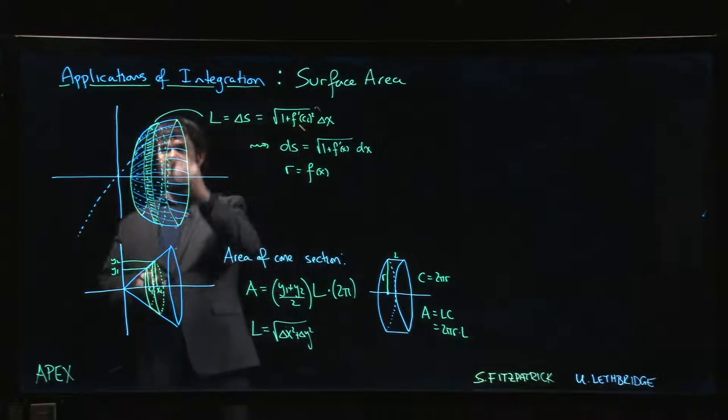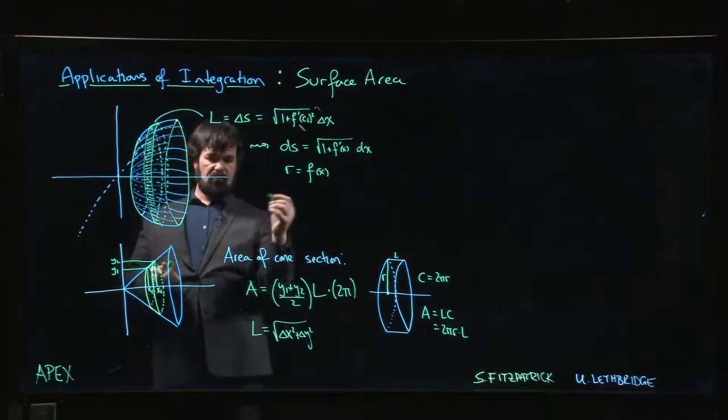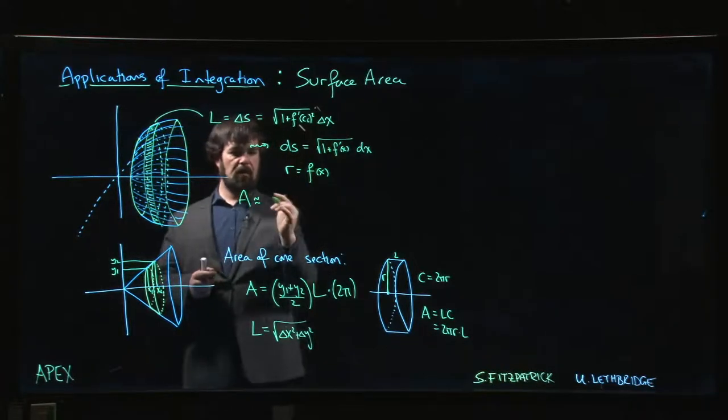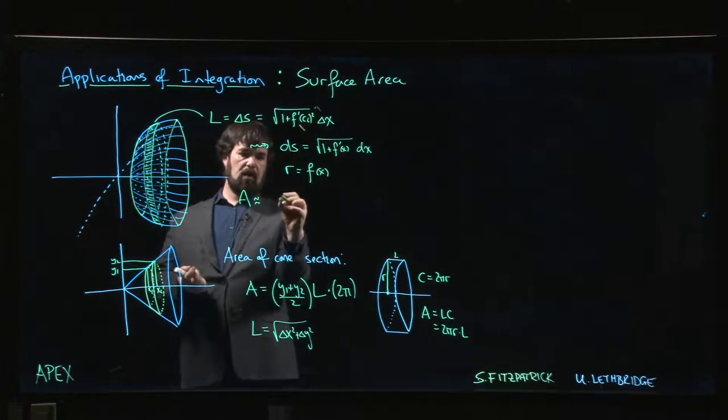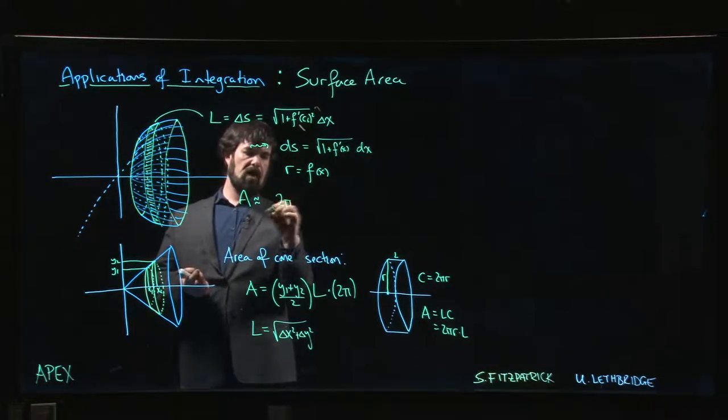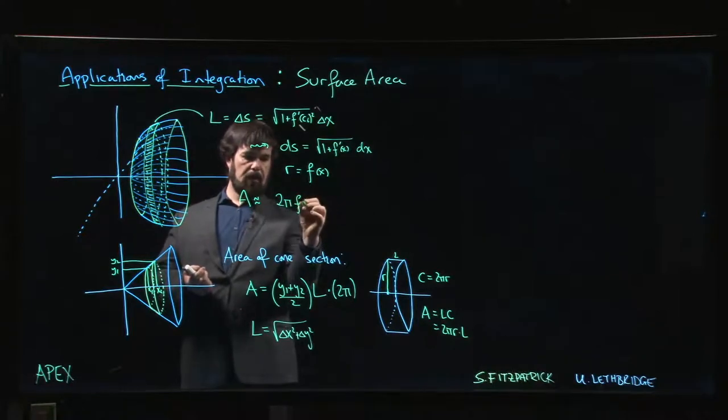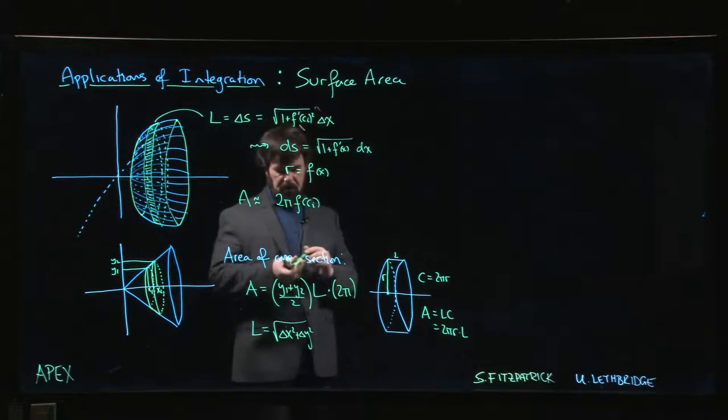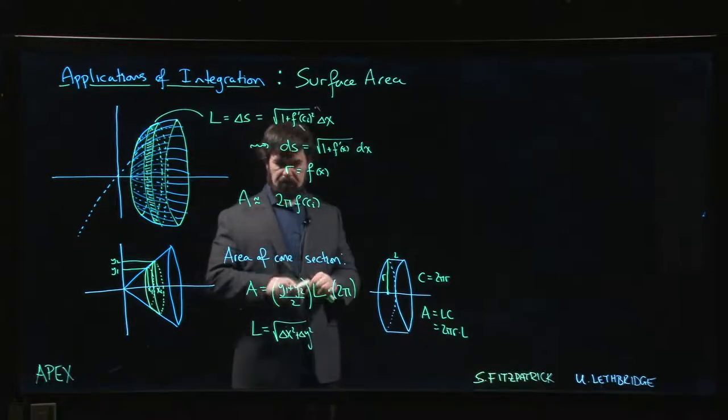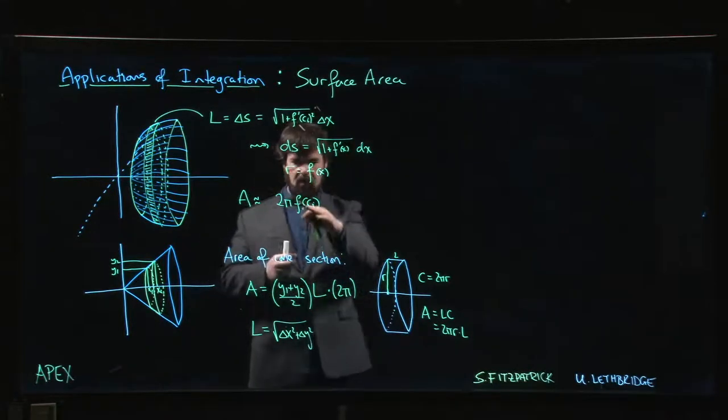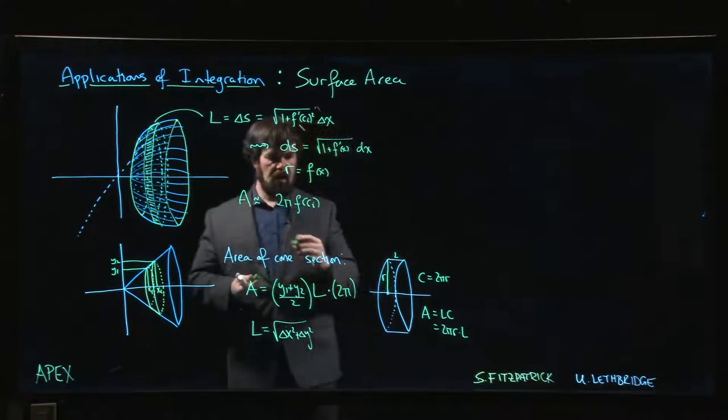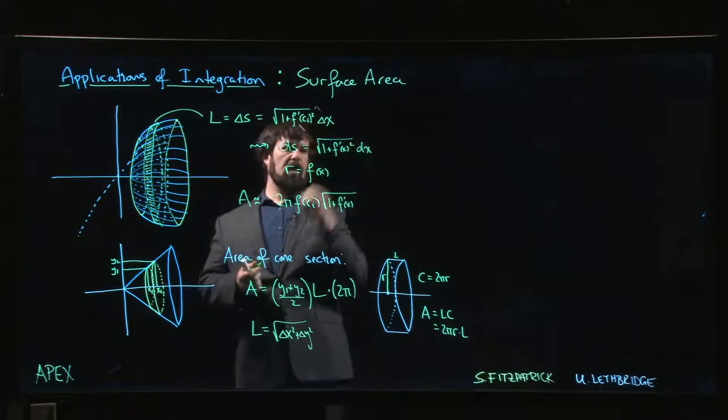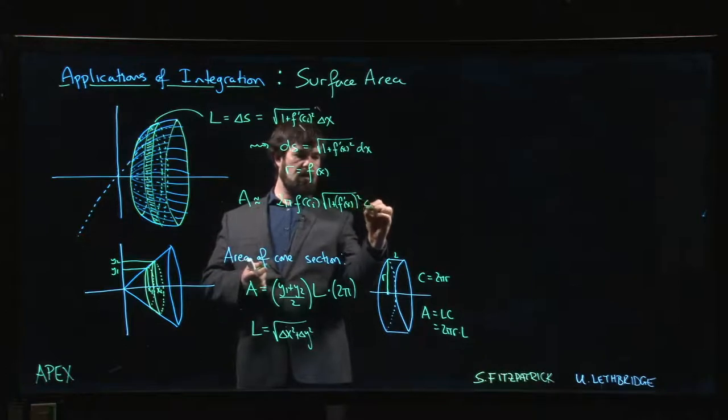And so what we get for the area of this strip is going to be approximately, if we're working with the deltas, the radius times 2π, so 2π F of CI. Somewhere in there, we're looking for the average over the interval. We can do this kind of thing again: F of X times the square root of 1 plus F prime of X squared times delta X.